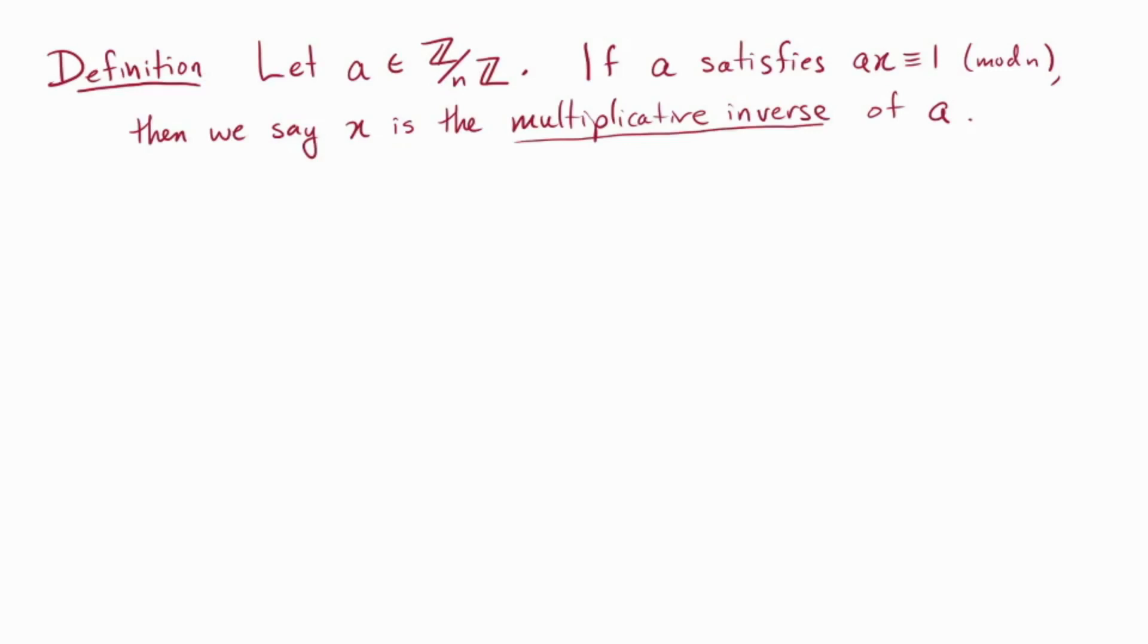So here's a definition. Let a be in Z mod nZ, that is the integers modulo n. Then if x satisfies ax = 1, we say that x is the multiplicative inverse of a.